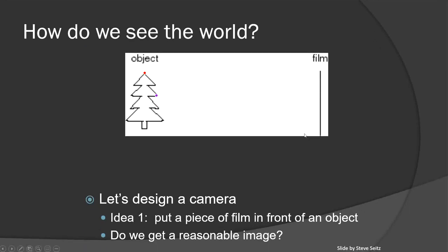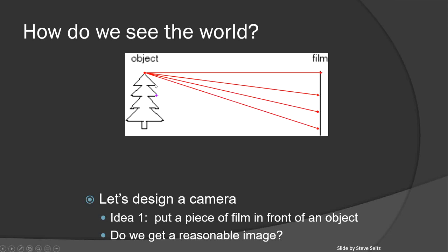Let's say we are given the task of constructing our own camera. We have a film or white screen. The question is: can we map an object to generate an image on top of the film or white screen? The answer is no. The reason is that every point on an object generates multiple rays — not a single ray. Since every point generates many rays, too many rays are projected onto the screen, making it impossible to generate a clear image.